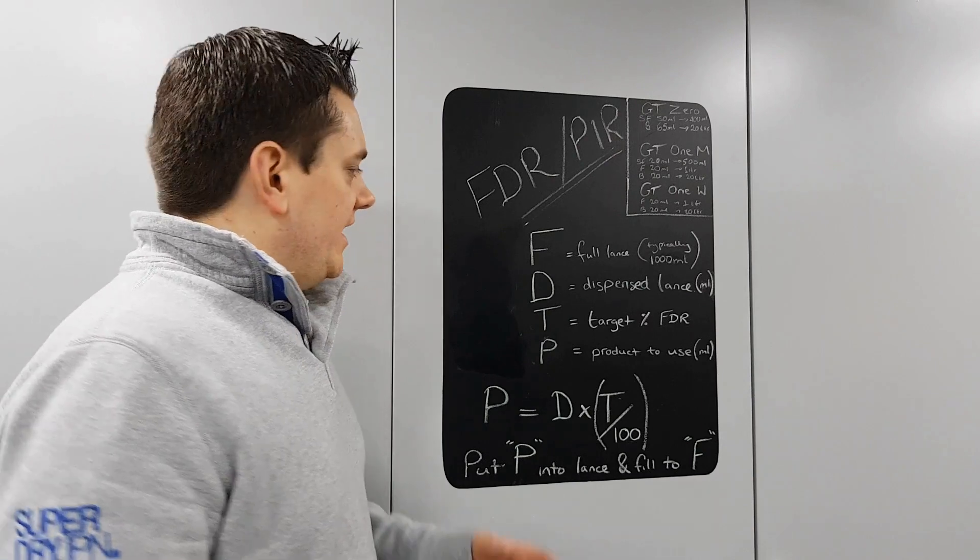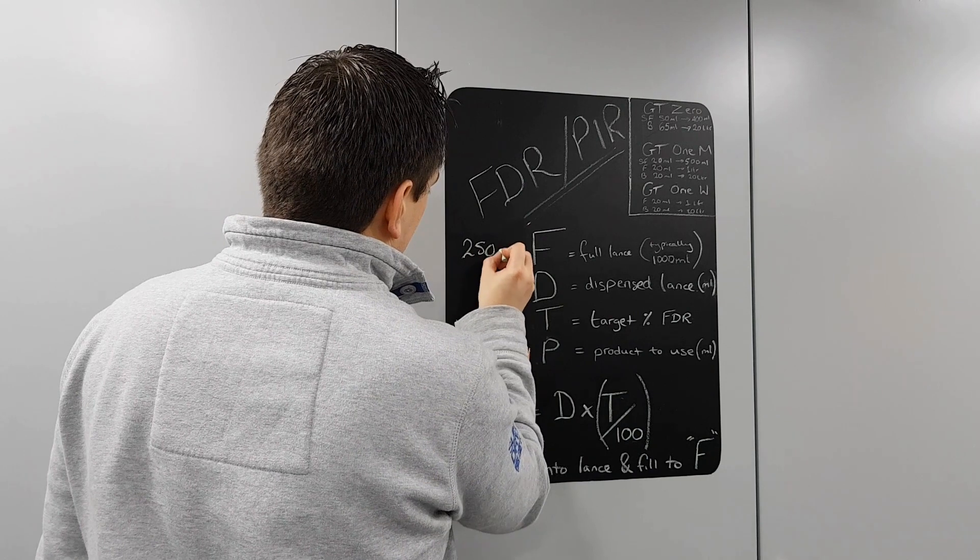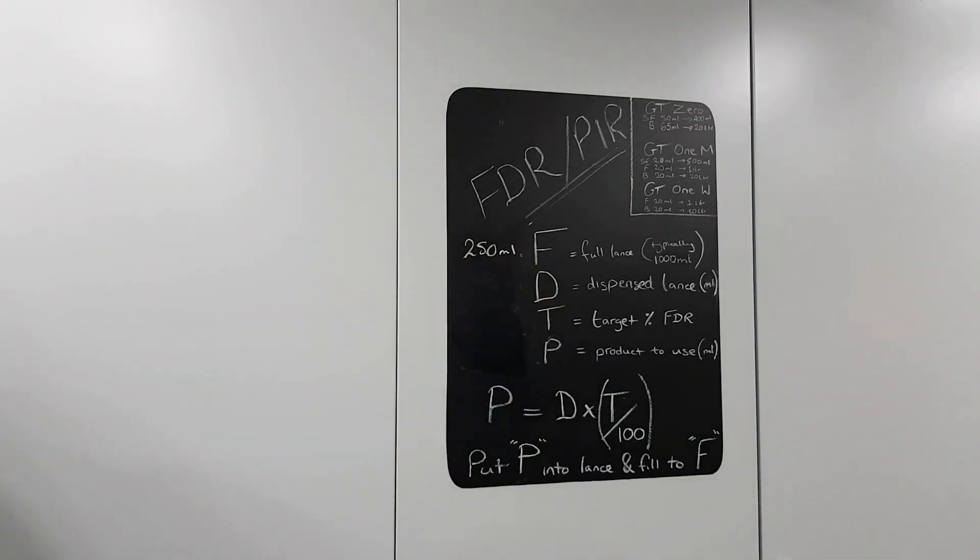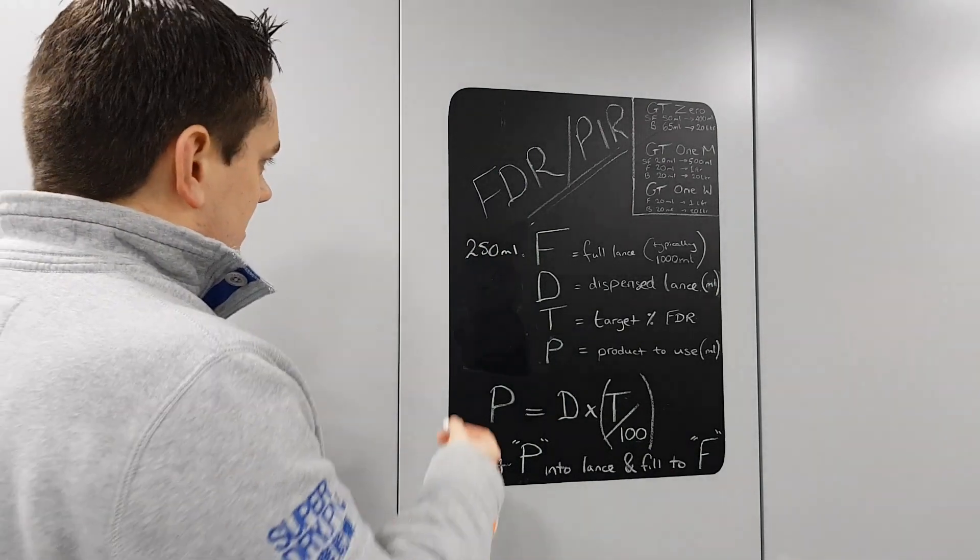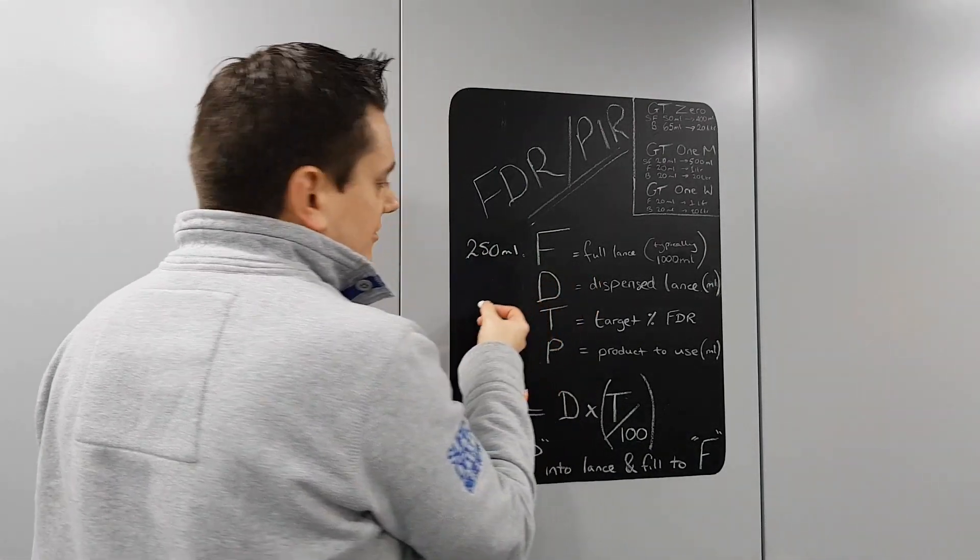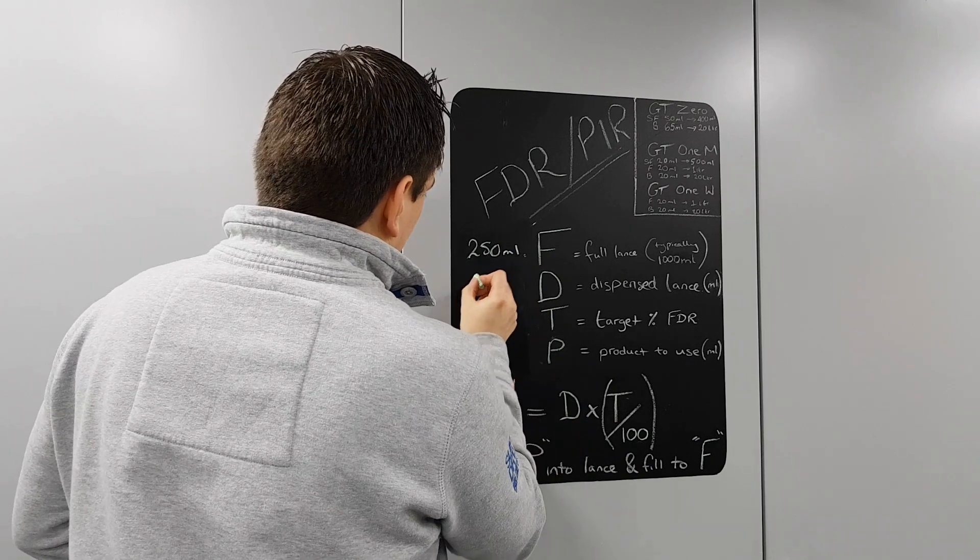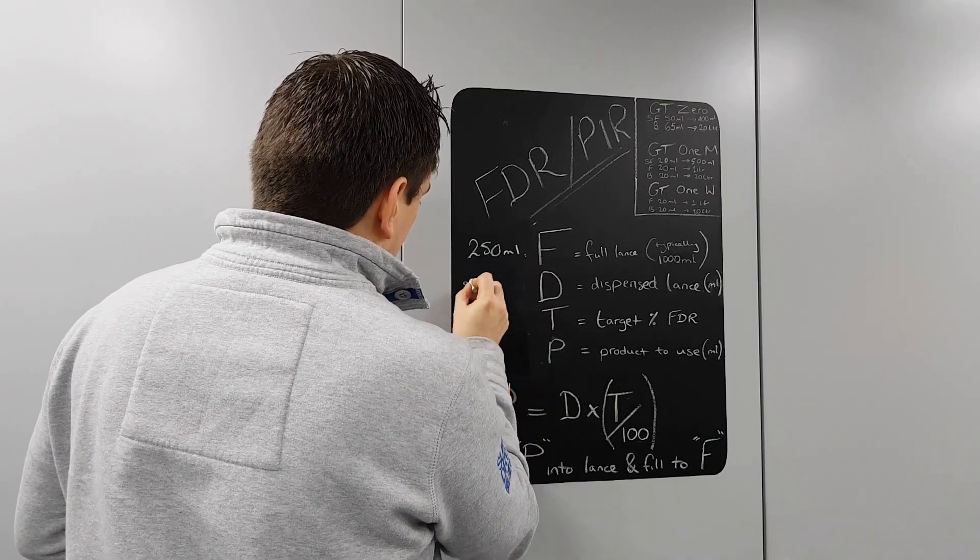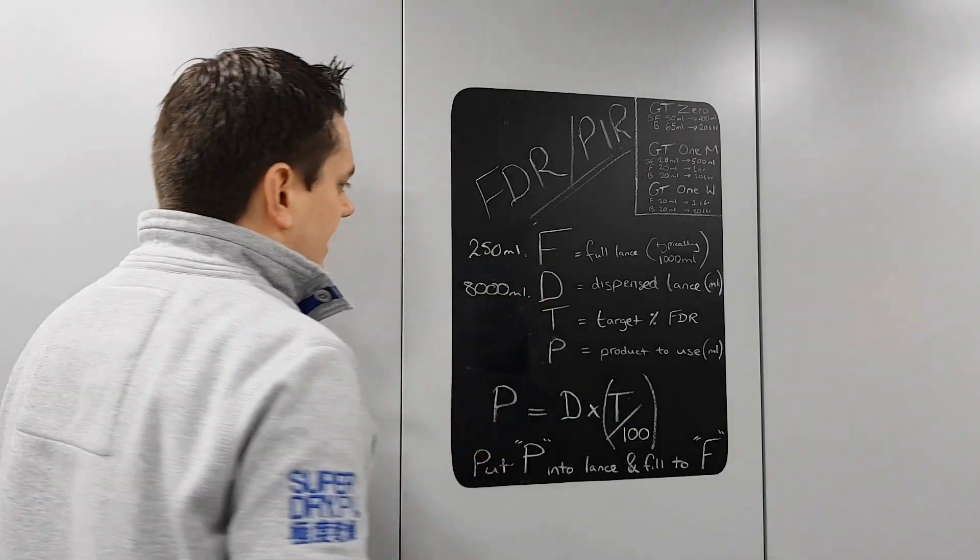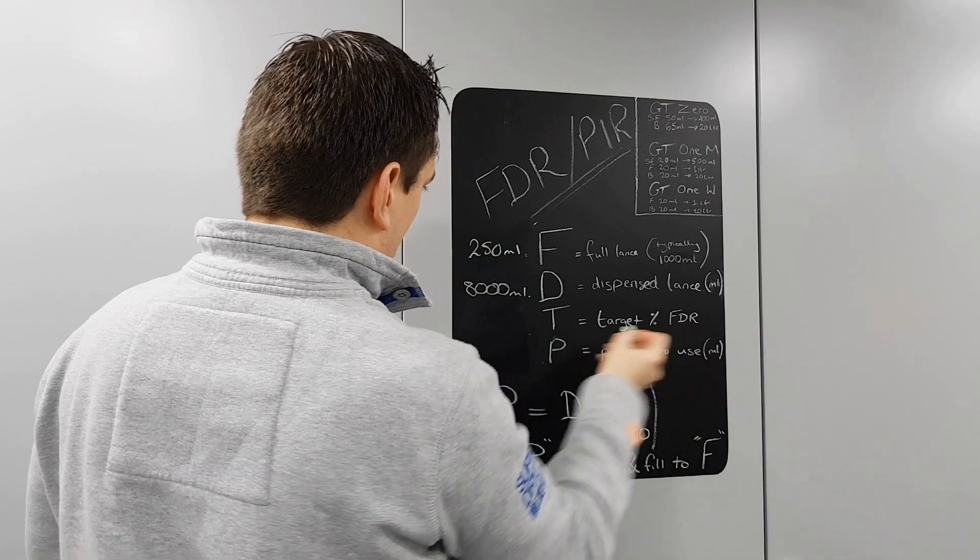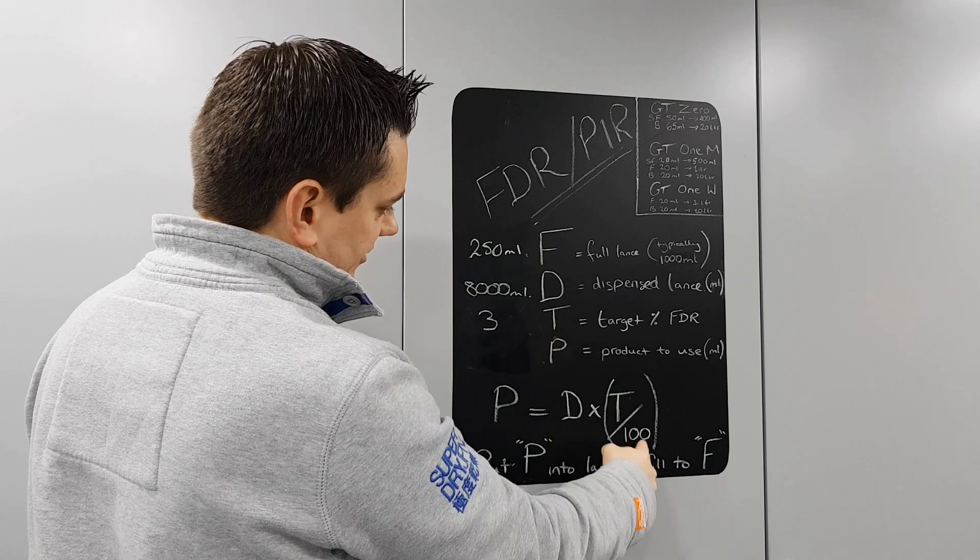So now we've worked everything out, we can fill this in. So a full lance was 250 mil. Bear in mind we're using the very small Karcher lance. Using a bigger lance guys, I suggest you use that as a set figure of 1000 milliliters, one liter. A dispensed lance, so that was after we ran that 250 mil into a bucket, we came out exactly at 8 liters.